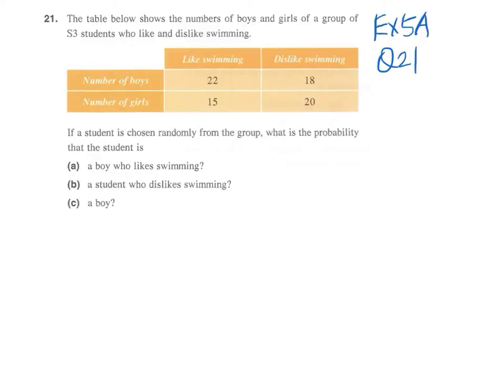It shows the number of boys and girls who like or dislike swimming in this table. A student is chosen randomly from this group. What is the probability that the student is...